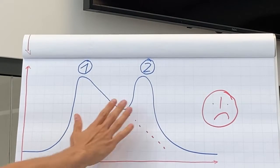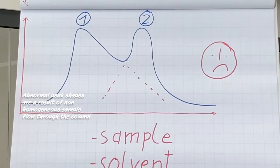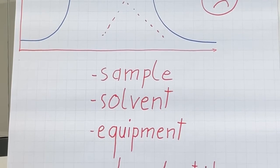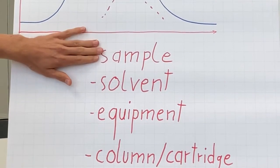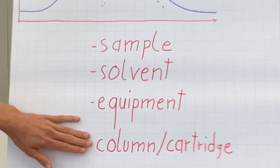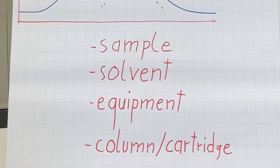Why do we get these peak shapes? In case of abnormal peaks, the sample does not flow homogeneously through the column or cartridge. This can be caused by the sample, the solvent, the equipment, or column or cartridge.